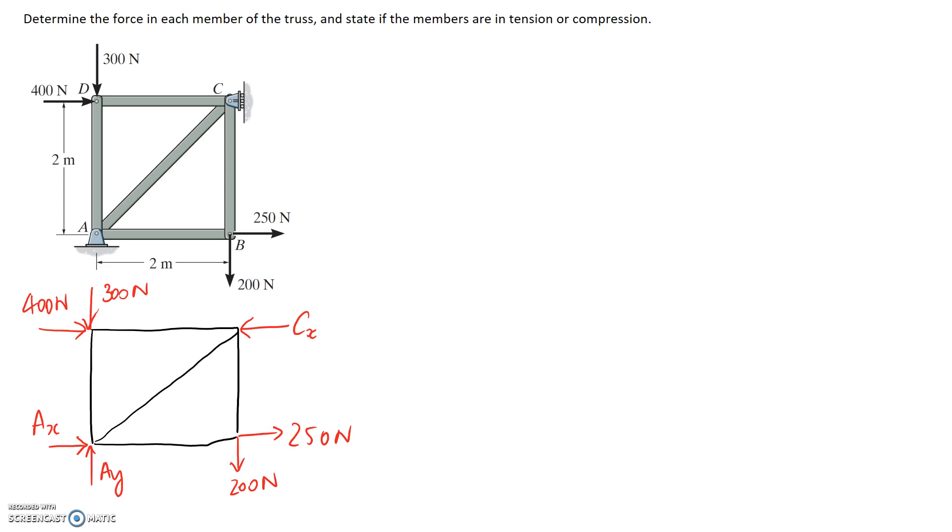Now we can start to try and solve for some of these forces. I'm just going to quickly pop on the name of all of our joints. We're going to try and solve this in a method that makes our life easier. So we want to pick joints where we have no more than two unknowns because we only have two equilibrium equations we can apply. Sum of forces in the x direction and sum of forces in the y direction. I think a good one to start with is probably joint D here simply because we're only going to have the two unknowns in these two members to deal with.